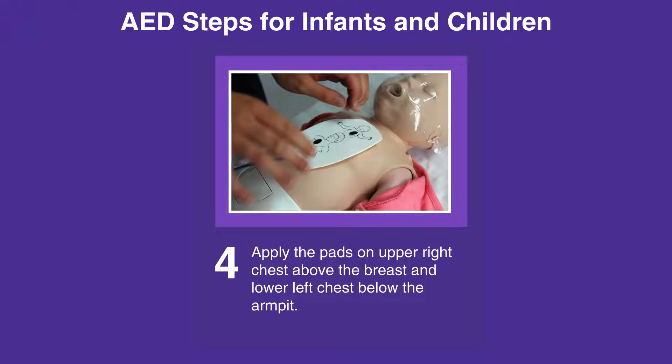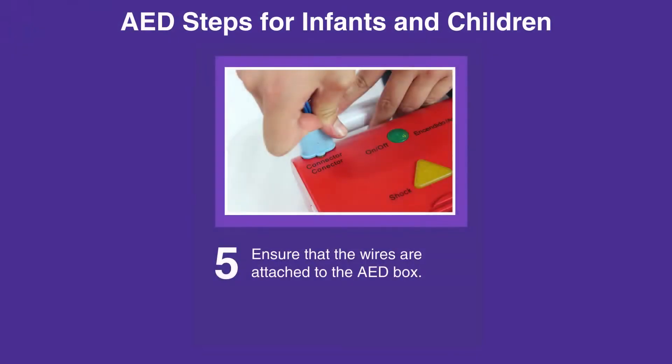Apply the pads on the upper right chest above the breast and lower left chest below the armpit. If pads will touch on the chest of an infant, apply one pad on the anterior chest and another pad on the posterior of the infant instead. Ensure that the wires are attached to the AED box.